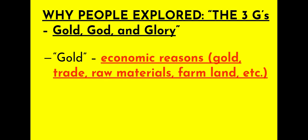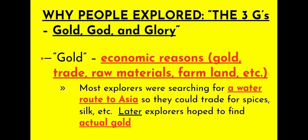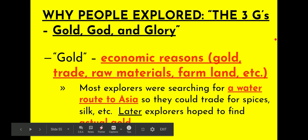So gold, God, and glory — what do we mean? Well, the first part is gold. Gold can mean the shiny stuff, but it can also just mean any economic reason — money, basically. That could be actual gold, or it could be trade. In the case of Christopher Columbus, he is looking for a water route to Asia so they could dominate trade and make money. That is an economic reason. Most explorers were searching for a water route to Asia so they could trade for spices, silk, etc.